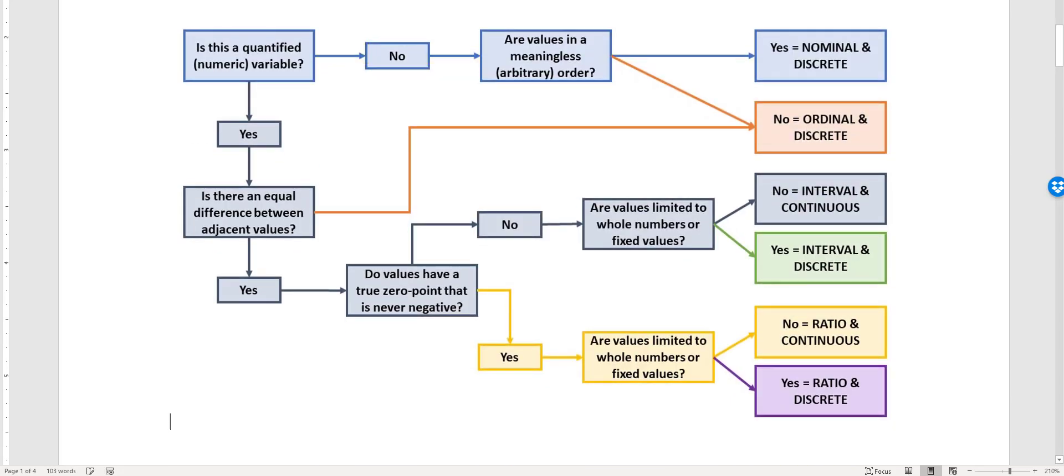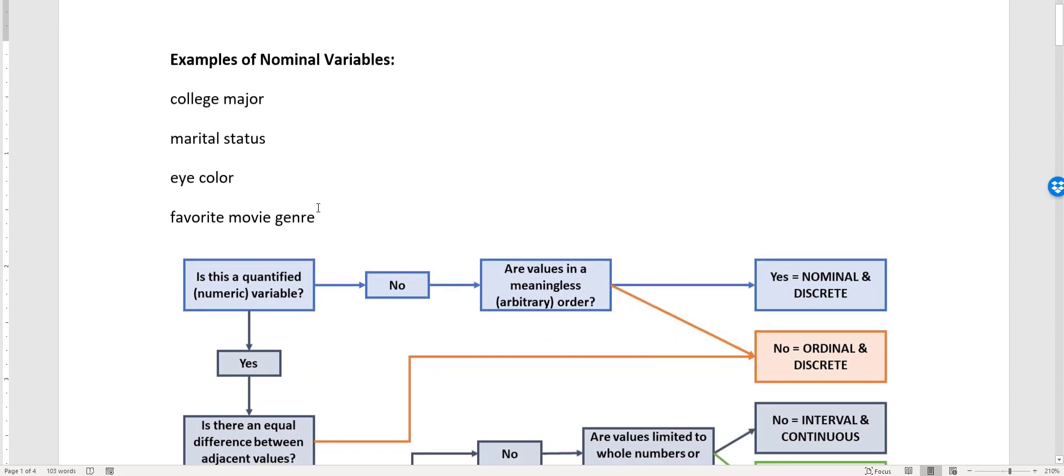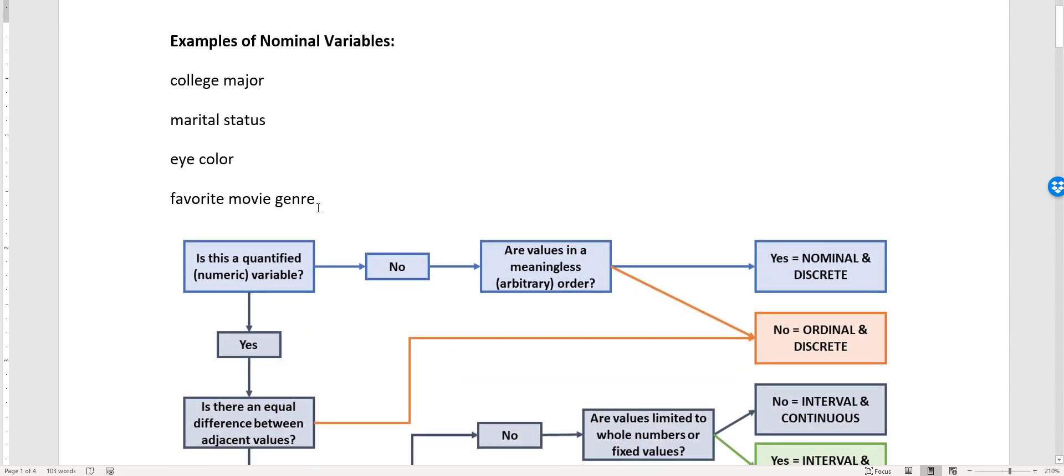Let's look for another one. Eye color - think about the way that data looks. Again, it's going to be words, right? Categories: brown, blue, green, hazel, whatever. Not numeric. If you put those in order, there's no meaningful order to it. There's no way to say blue is a higher value than green or whatever. So nominal again.